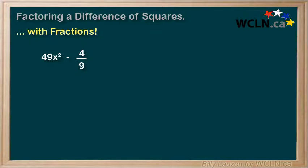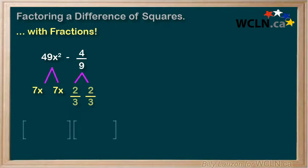We have 49x squared minus 4 over 9. It's pretty clear that 49x squared is a perfect square of 7x times 7x, so we can put that down below. It might take a little bit to notice that 4 over 9 is also a perfect square of 2 over 3 times 2 over 3.